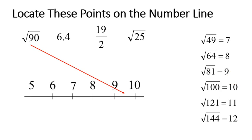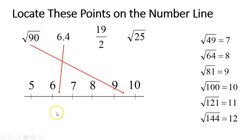The next point is 6.4. Since the whole number is 6, it goes between 6 and 7. Since 6.5 is directly in the middle, 6.4 is going to be a little bit to the left of the middle — right around that area.